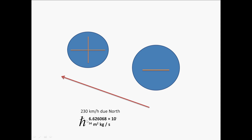H-bar is a very small number — it's about 6.26 times 10 to the negative 34th. That's 10 with 34 zeros behind it. Looking at the units, it's force per area — kilograms mass per meter squared per second, which is acceleration. So in a sense it's a force factor.